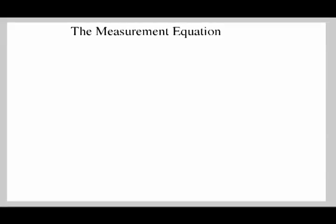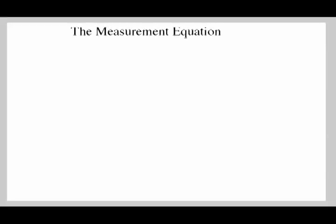Welcome to this lecture on the measurement equation for radio interferometers. In this lecture, we're going to be talking about how two different antennas receive a signal from the sky and how we can describe that mathematically, and ultimately we're going to relate what an interferometer measures to the sky by a Fourier transform.